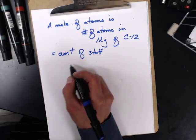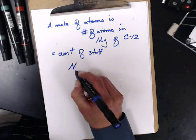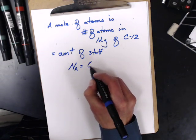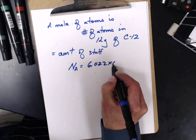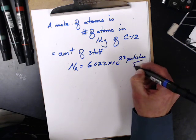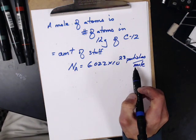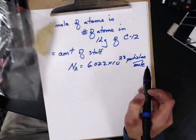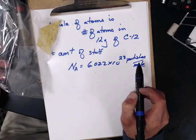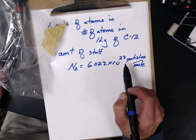Avogadro's number. So, his number, Avogadro's number is 6.022 times 10 to the 23rd particles per mole. So, this is how many particles you have per mole. So, the number of chips I have is 1 over 6.022 times 10 to the 23rd of a mole.